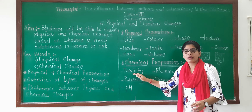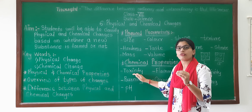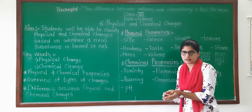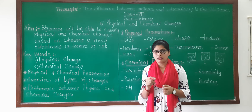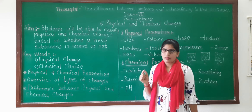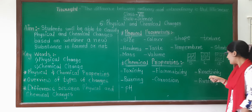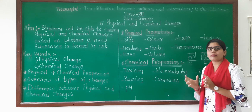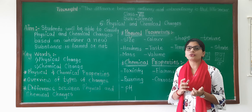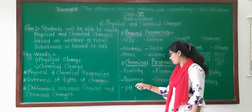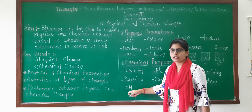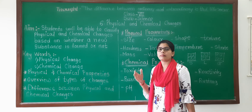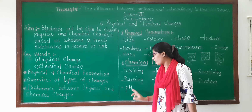Chemical properties include Toxicity — which chemical or element is present in that particular matter. Next, Flammability — some substances like perfumes and oil are labelled Flammable, that is a chemical property. Next is Reactivity — the chemical reaction between two elements. Then Burning, Corrosion, Rust, and pH. We have already learned about pH — that is Acid, Base, and Salt.